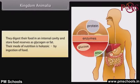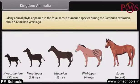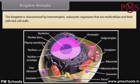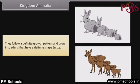Their mode of nutrition is holozoic, by ingestion of food. Many animal phyla appeared in the fossil record as marine species during the Cambrian explosion about 542 million years ago. This kingdom is characterized by heterotrophic eukaryotic organisms that are multicellular and whose cells lack cell walls. They follow a definite growth pattern and grow into adults that have a definite shape and size.